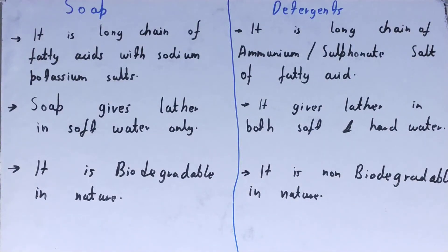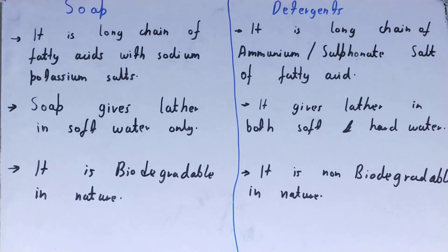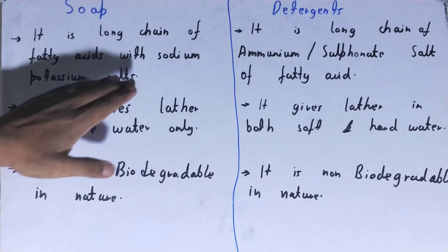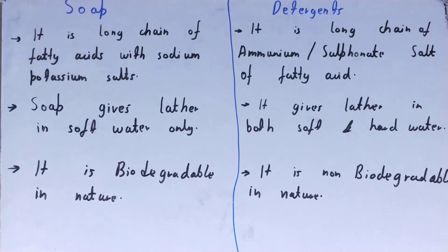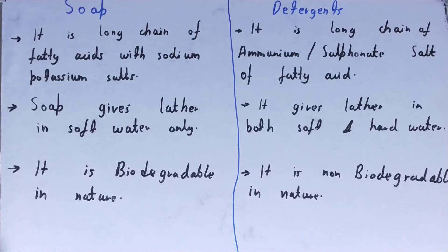In this video I'll be covering the difference between soaps and detergents. If we talk about soap, it is a long chain of fatty acids with sodium or potassium salts. So soap is basically a sodium or potassium salt with a long chain of fatty acids.